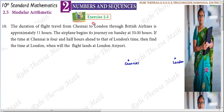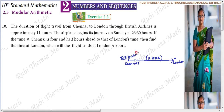Chennai to London through British Airlines is approximately 11 hours, so the travelling time is about 11 hours. The airplane begins its journey on Sunday at 23:30 hours. If the time at Chennai is 4.5 hours ahead of London's time, then find the time at London — when will the flight land at London airport?